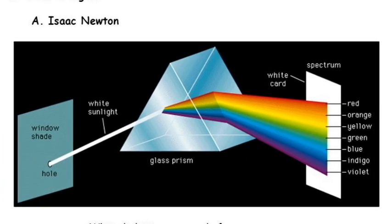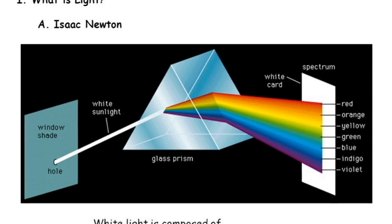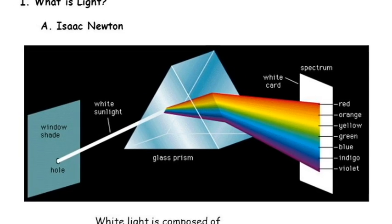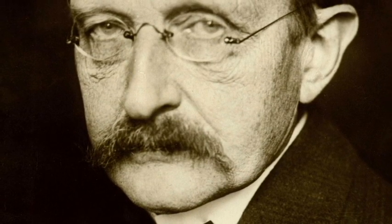It was assumed, therefore, that light waves would need an environment to propagate, an environment called ether. Despite numerous detection attempts, the ether has not been discovered so far.